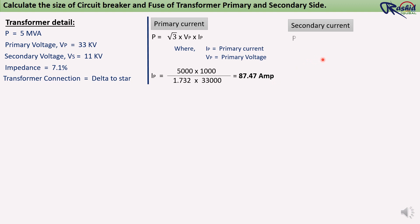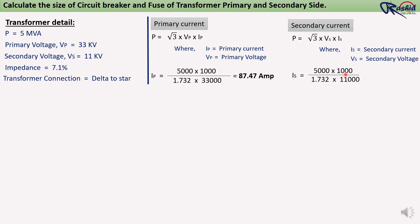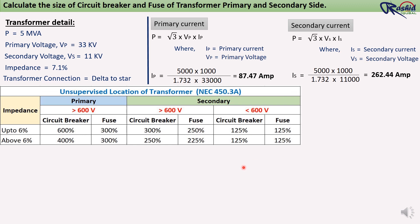For secondary current: P = √3 × Vs × Is. Putting in the values: (5000 × 1000) ÷ (1.732 × 11,000) = 262.44 ampere. This is our secondary current. Referring to the NEC standard, both primary voltage (33 kV) and secondary voltage (11 kV) are more than 600 volts. So we will follow this option: multiply 250% for circuit breaker calculation and 225% for fuse calculation at the secondary side.